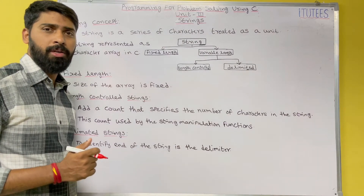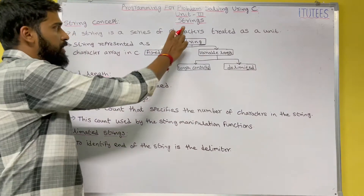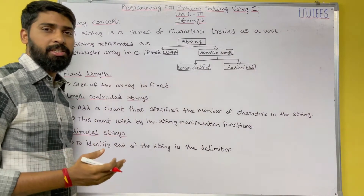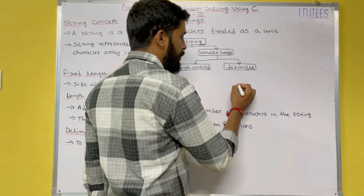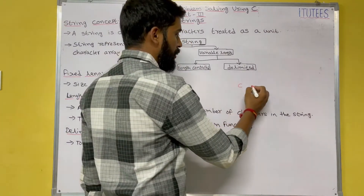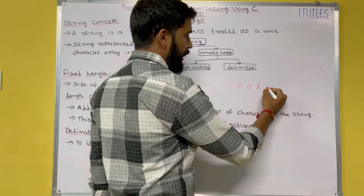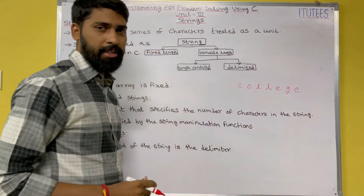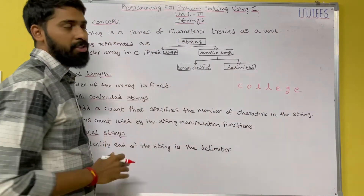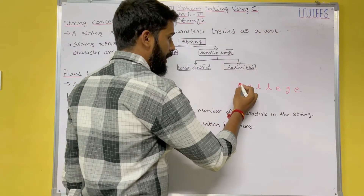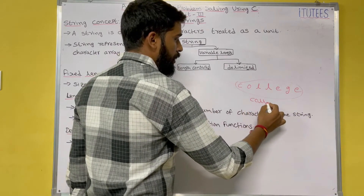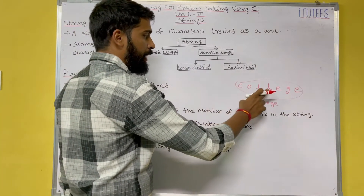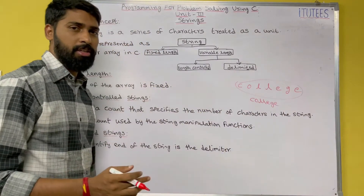Hello friends, welcome to C programming tutorials. In this class we are going to learn about strings. A string is a series of characters treated as a unit. For example, C, O, L, L, E, G, E are individual characters. If you combine all these characters you get 'COLLEGE', which is a string — a collection of characters.